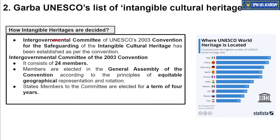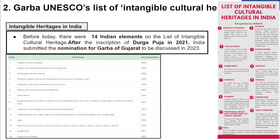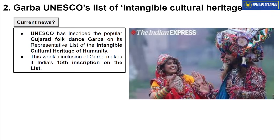An inter-governmental committee of UNESCO decides which intangible heritages are to be recognized. India had 14 intangible heritages identified by UNESCO, including Buddhist chanting, Kalbelia dance from Rajasthan, Chhau dance, and Kumbh Mela. The 14th was Durga Puja, included in 2021. The current news is that UNESCO has now included the Gujarati folk dance Garba in the intangible heritage list, making it India's 15th entry.